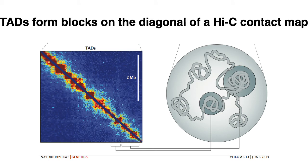In terms of a Hi-C contact map, TADs are basically visualized as blocks on the diagonal of the Hi-C map. Here's a cartoon diagram showing hypothetically how two blocks on this Hi-C map correspond to regions of the genome that are generally in close proximity in the nucleus.